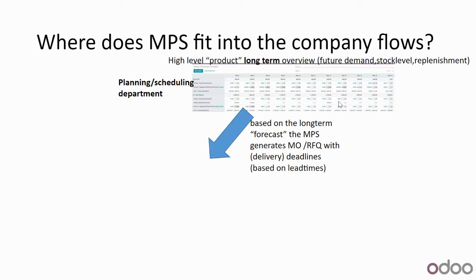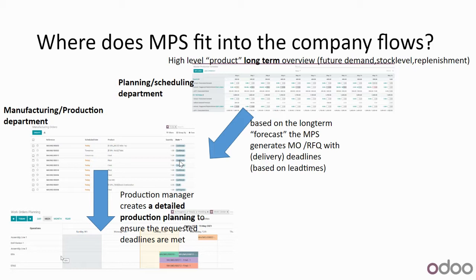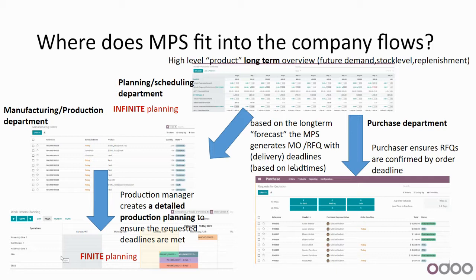On the manufacturing side, the long-term planning generates a list of manufacturing orders with a certain priority. The production manager takes this list and transforms it into a detailed production plan, ensuring requested deadlines are met. On the purchasing side, they also receive a list of items to be purchased with a priority and a deadline by which orders must be placed to ensure all components arrive on time to produce the scheduled goods.